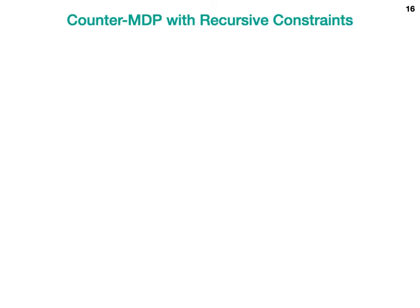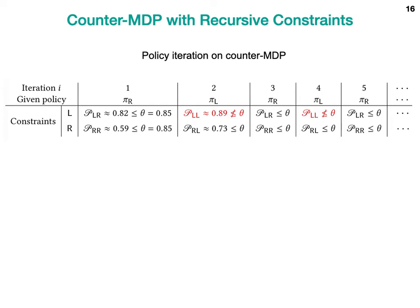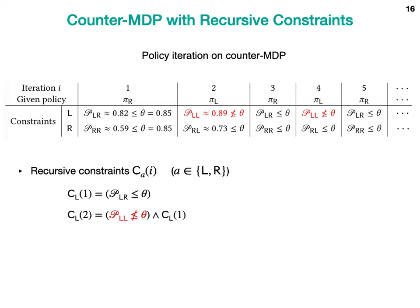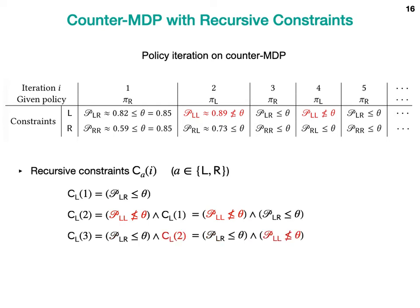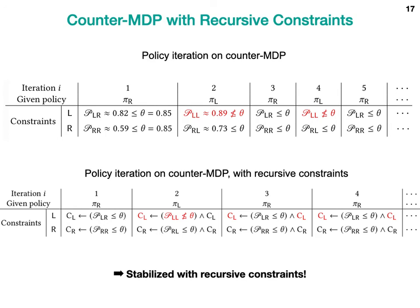We hypothesize that the safe action set in P4 must be more conservative, which is at least true for the counter MDP. Let's revisit the counter MDP with the idea of recursive constraints. The counter MDP had an oscillation problem in running policy iteration. The idea of recursive constraints is to define the constraint recursively over iterations. For example, the recursive constraint for choosing action L at iteration 1 is the same as before, but at iteration 2 it is the conjunction of constraints at iterations 1 and 2. Thanks to recursive constraints, the oscillation in policy iteration no longer occurs as previous constraints come into play.